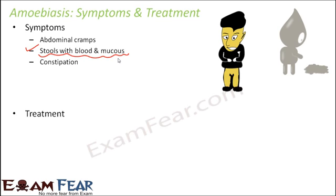Another symptom is constipation. All these symptoms are related to the process of ejection, because the large intestine is involved. The blood in the stools comes from when the pathogen invades the lining of the large intestine — it starts tearing up that lining, which releases blood that then comes out through the stools.